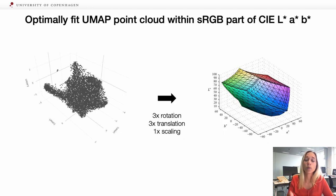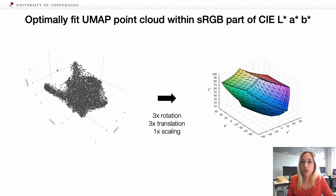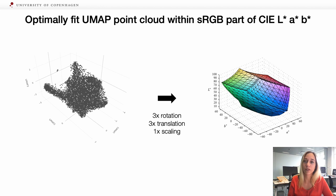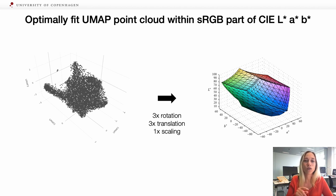Now, we have to optimally fit this UMAP point cloud in the displayable part of CLAB. What are we allowed to do? We are allowed to do rotations and translations in the three dimensions. But since we want to preserve the distances — which is a feature that UMAP gave us — we can only apply uniform scaling. Our optimization algorithm is looking for the highest possible scaling factor without leaving points outside of this polygon.